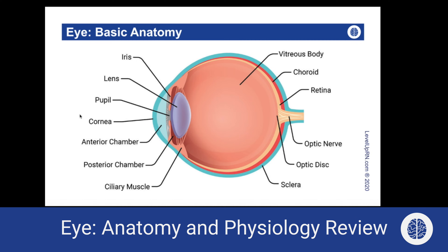Let's trace the path of light waves. Light waves come in through the cornea, then enter the aqueous humor, which fills both the anterior and posterior chambers of the eye. It will then go through the pupil, which is the opening at the center of the iris, and then through the lens, which helps to focus light on the retina. The light wave then enters the vitreous body or humor, which fills the vitreous chamber, and then reaches the retina. The retina converts the light to an electrochemical impulse, which is transmitted to the optic nerve and then up to the brain.